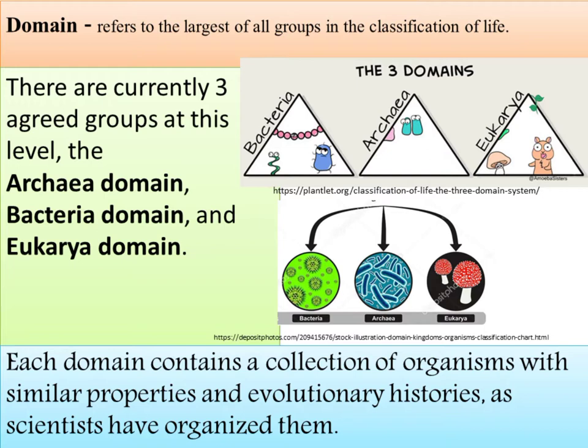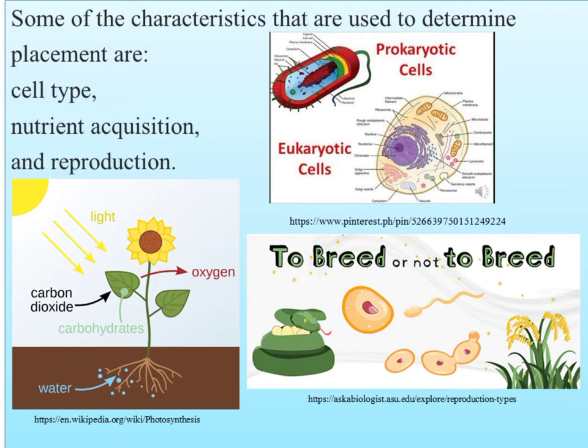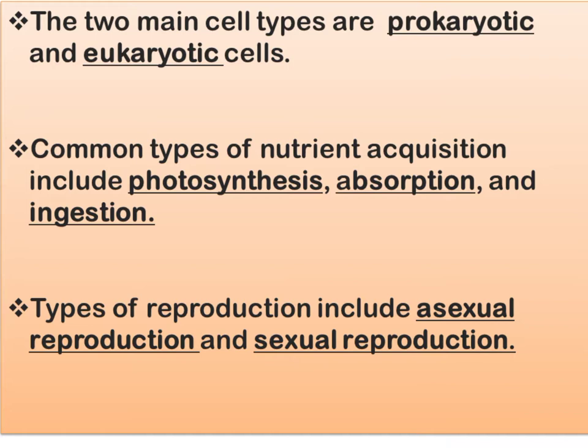There are currently three agreed groups at the domain level: the Archaea domain, the Bacteria domain, and the Eukarya domain. Each domain contains a collection of organisms with similar properties and evolutionary histories. In biology, kingdom is a taxonomic rank composed of smaller groups called phyla or divisions. Organisms are placed into kingdoms based on similarities such as cell type, nutrient acquisition, and reproduction. The two main cell types are prokaryotic and eukaryotic. Types of nutrient acquisition include photosynthesis, absorption, and ingestion, while reproduction includes asexual and sexual reproduction.